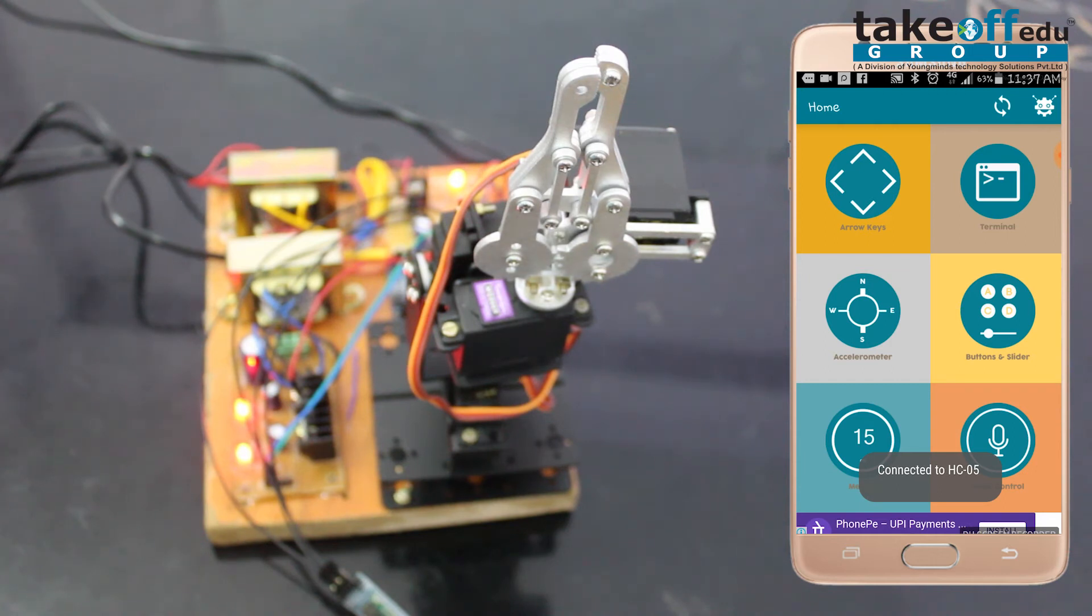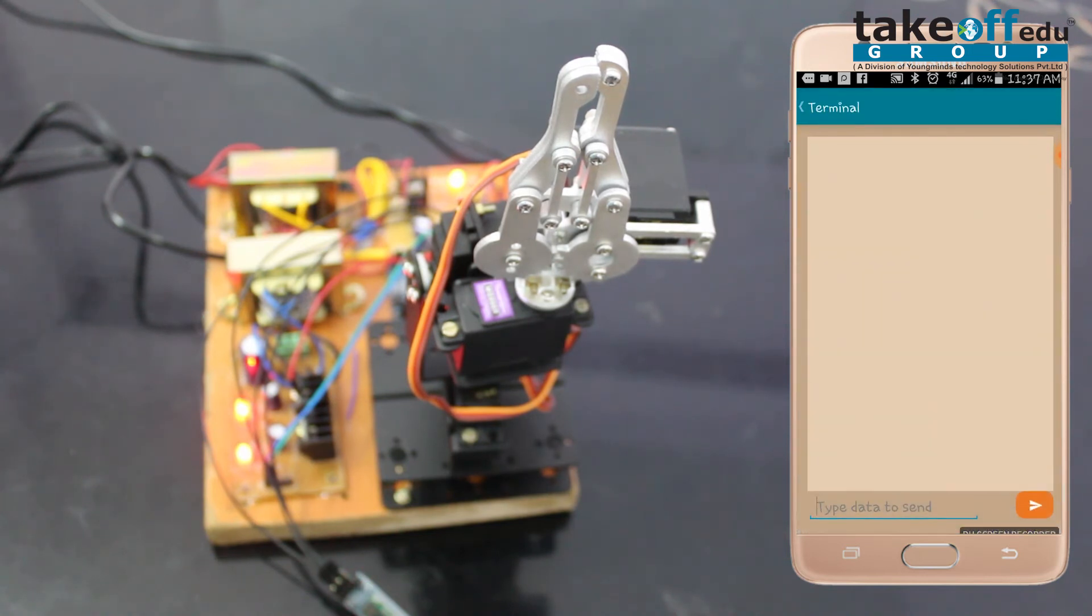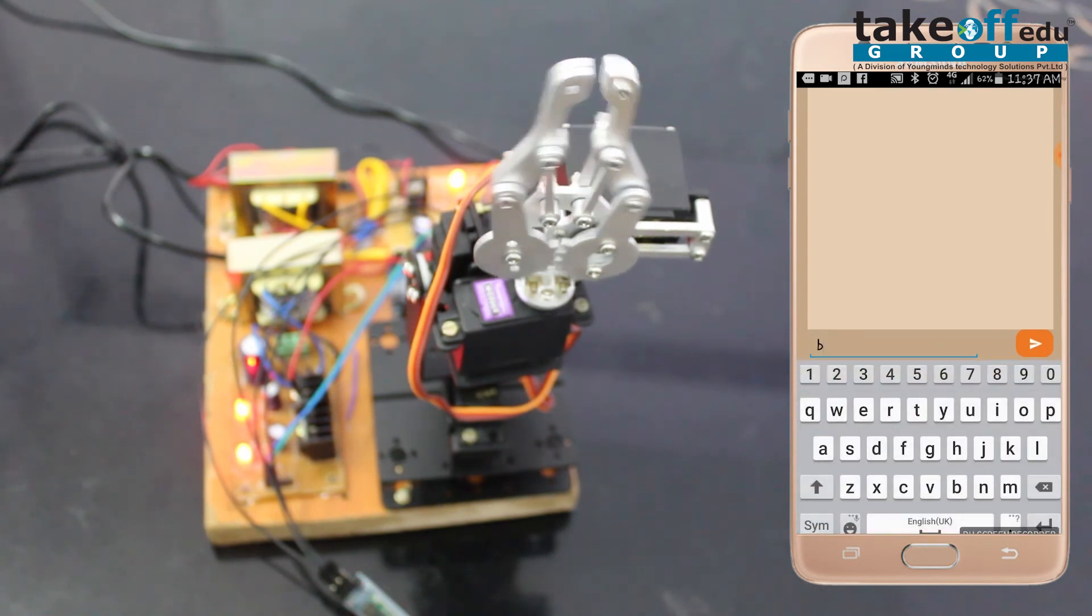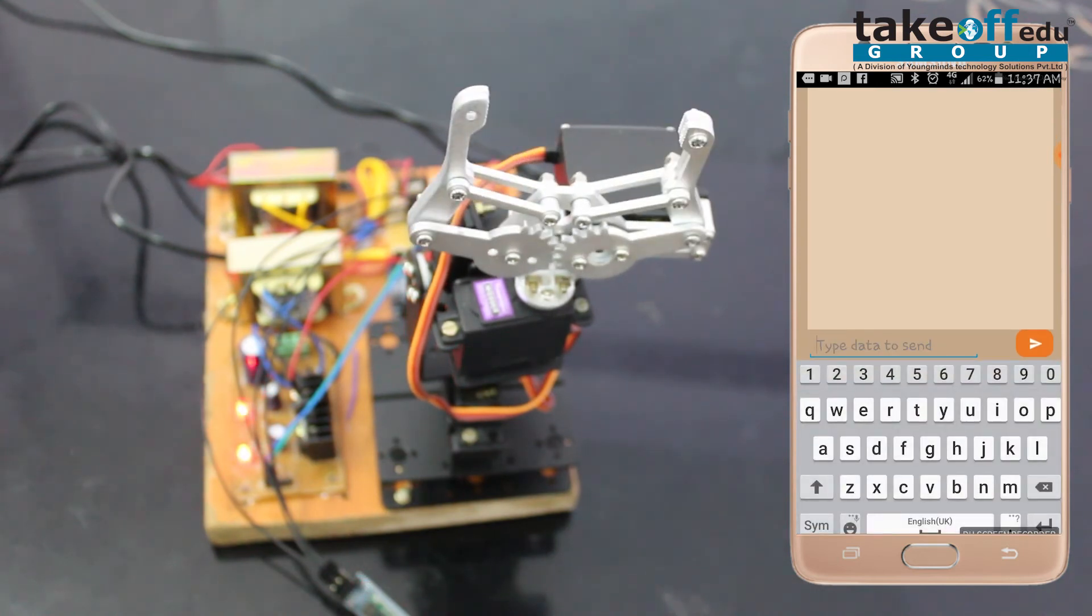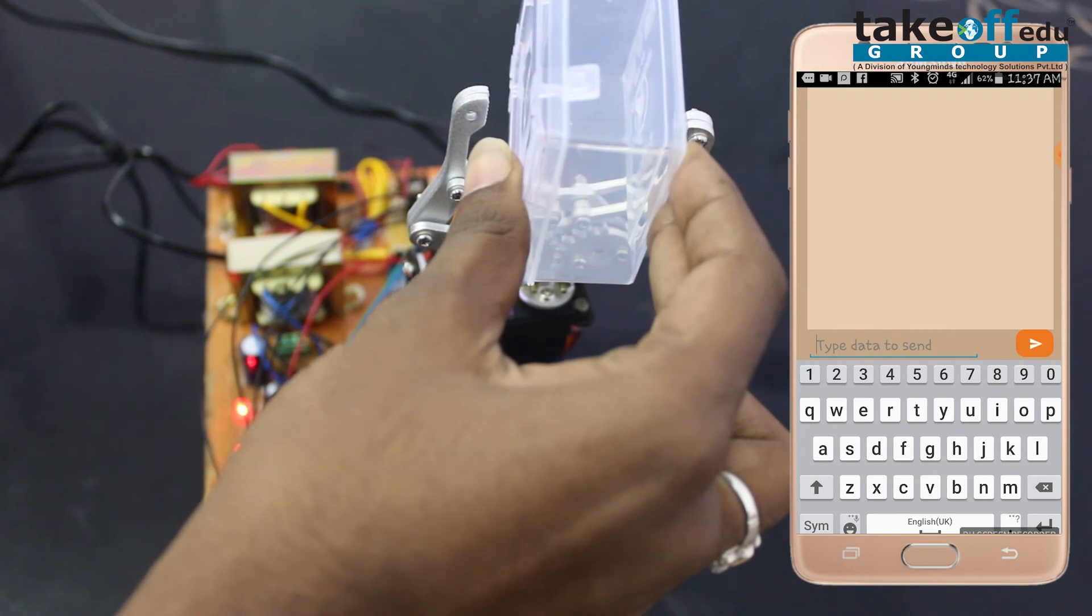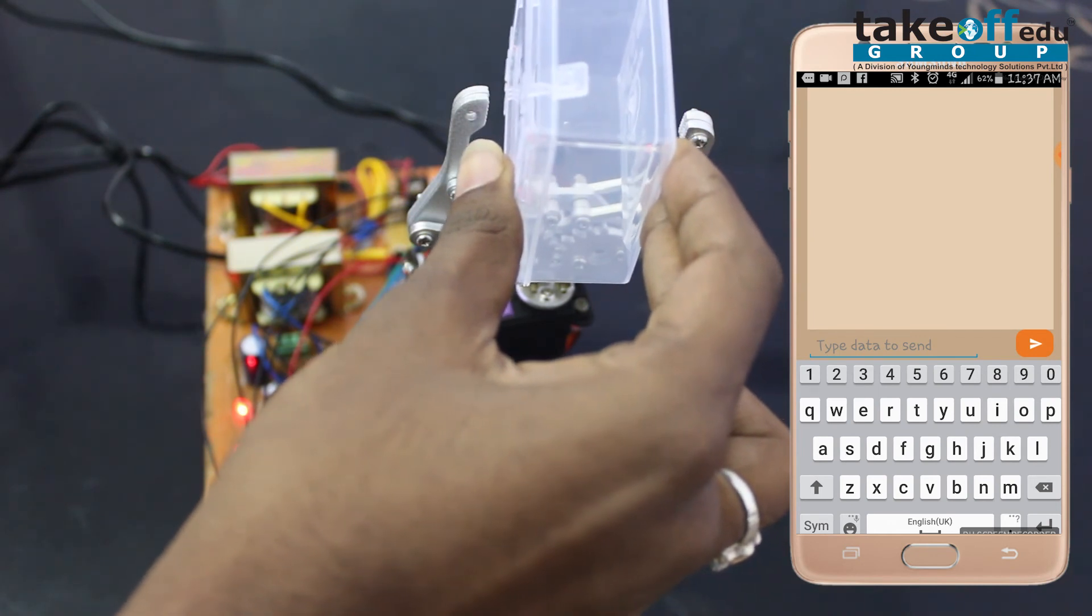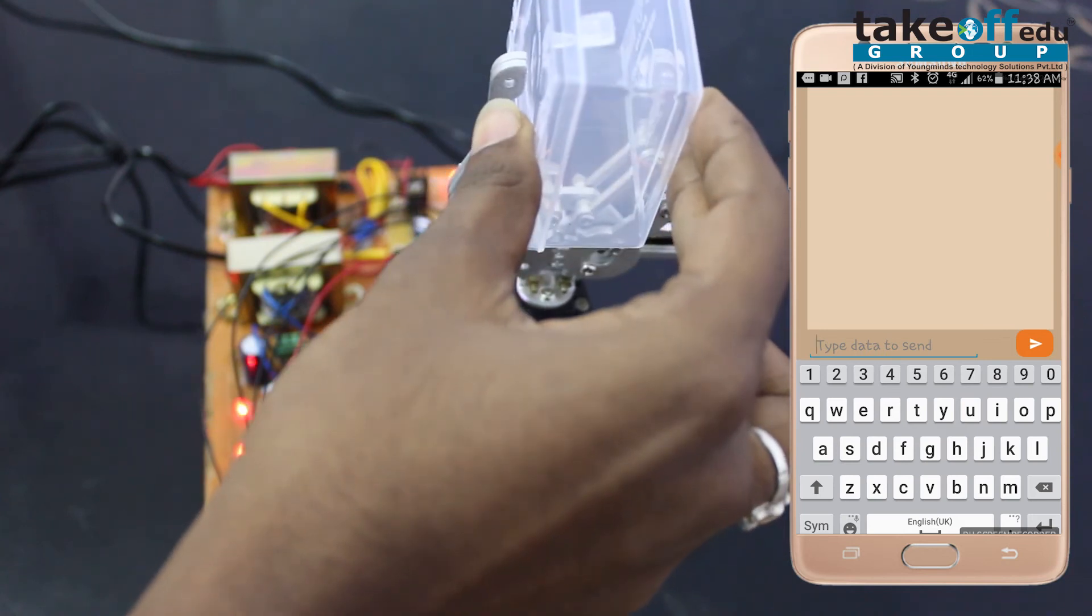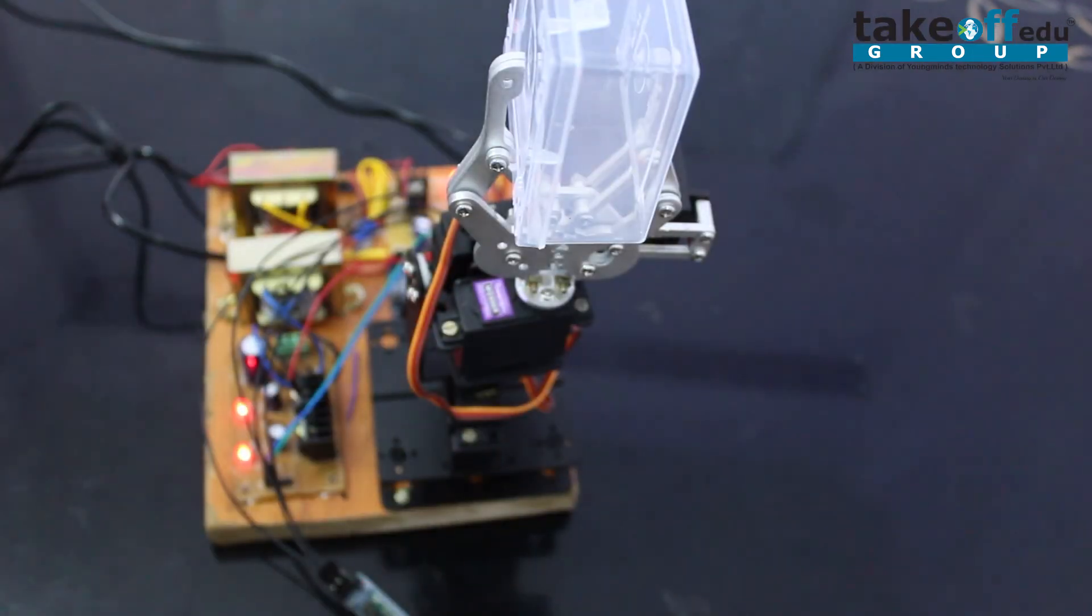Now, I am sending some commands for working of this robotic arm, like A, B, C, what we programmed before. First, I am sending B. It opened the arm to hold the object. I am placing this object in this arm. And I am sending A for holding this object. And the robot arm folded that object.